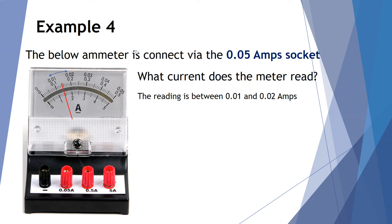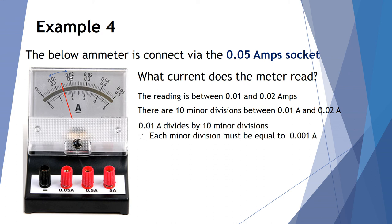The reading is between 0.01 and 0.02. There's 10 divisions between 0.01 and 0.02, a difference of 0.01 of an amp. Dividing it by 10 means that each minor division is actually equal to 0.001 of an amp. 1 milliamp, in fact. So in this case we start at 0.01 and we go up one, two, three, four divisions. Each division is worth 0.001 of an amp. So in total we've got 0.01 plus 0.004. So our current reading from this meter is 0.014 of an amp.